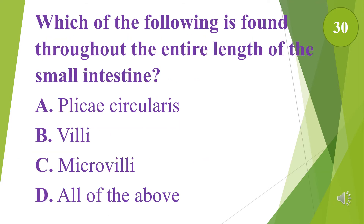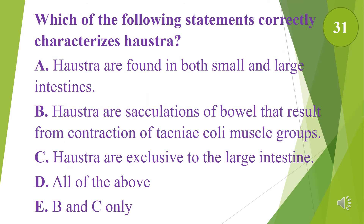Which of the following statements correctly characterizes haustra? A. Haustra are found in both small and large intestines. B. Haustra are sacculations of bowel that result from contraction of taeniae coli muscle groups. C. Haustra are exclusive to the large intestine. D. All of the above. E. B and C only. The answer is E, B and C only.